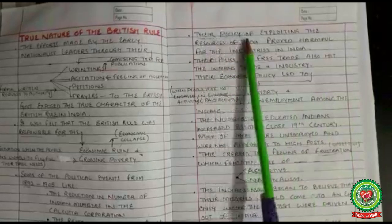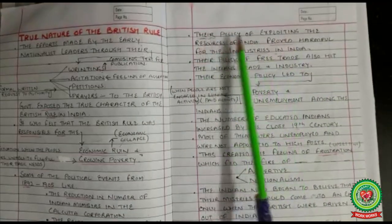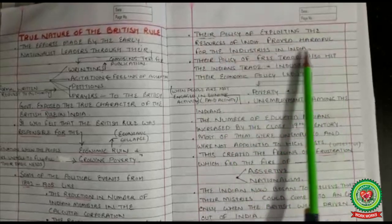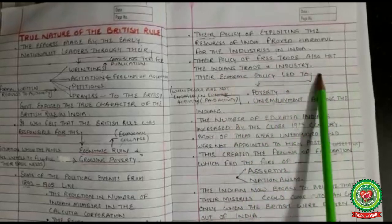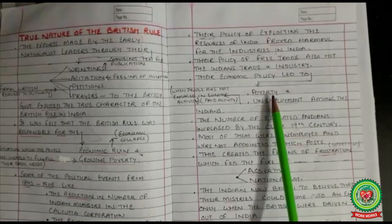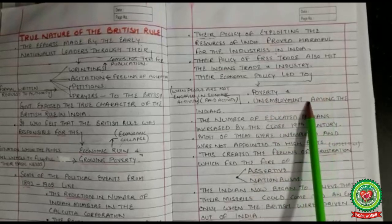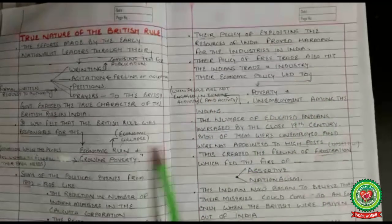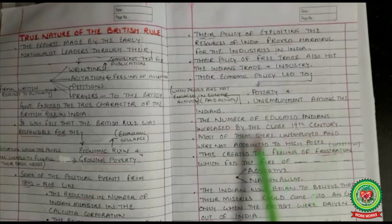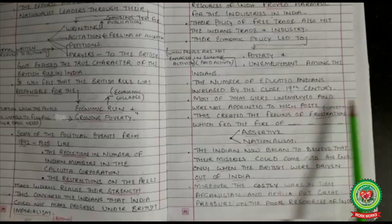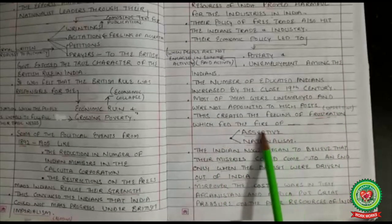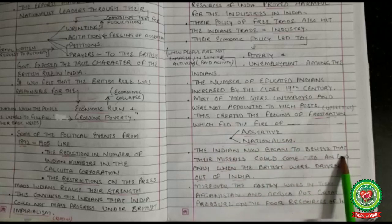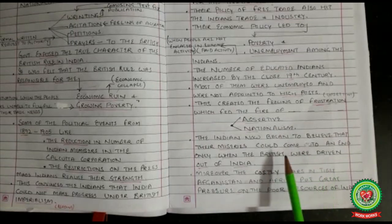The British policy of exploiting India's resources proved harmful for industries in India. Their policy of free trade — trade without tax — also hit Indian trade and industry. Their economic policy led to poverty and unemployment. By the close of the 19th century, the number of educated Indians had increased, but most were unemployed and were not appointed to high posts. This created a feeling of frustration among the young, which fed the fire of assertive nationalism.